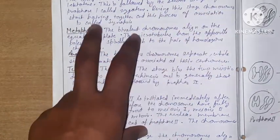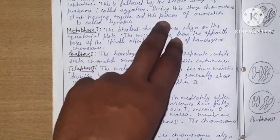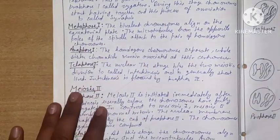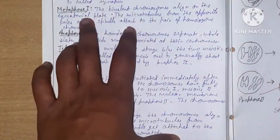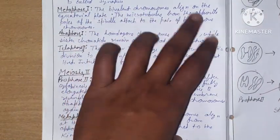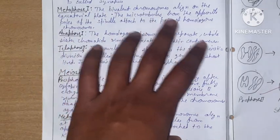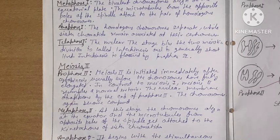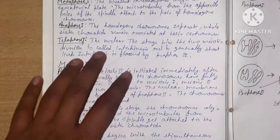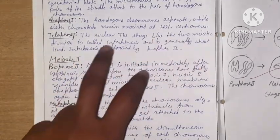In metaphase I, the bivalent chromosomes align on the equatorial plate. The microtubules from opposite poles of the spindle attach to pairs of homologous chromosomes. In anaphase I, the homologous chromosomes separate while the sister chromatids remain attached at their centromeres.